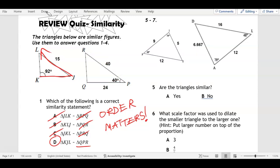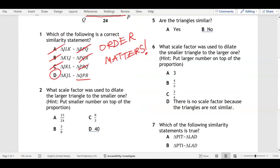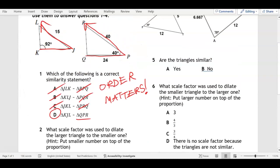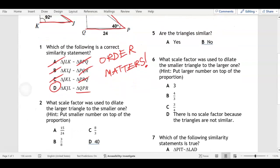Process of elimination, but let's check it. KJL, K to J to L should be Q to P to R and it is, so it is letter D. Do you see how that works?